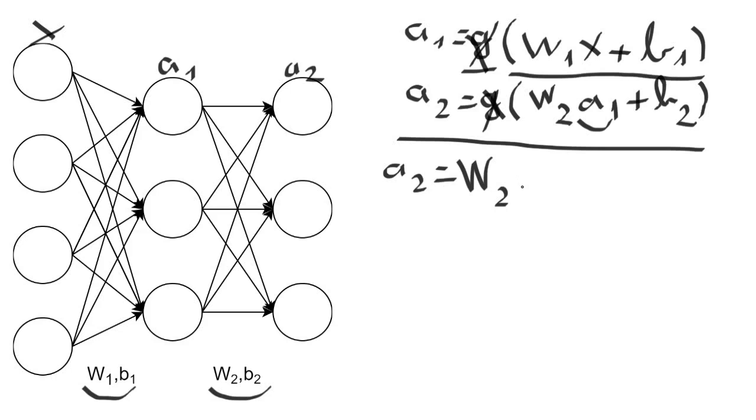this equation here. So w2 w1 x plus b1 plus b2 and this equals to w2 w1 x plus dot dot dot. Now we can observe that we can replace the product w2 w1 by another matrix multiplication w.